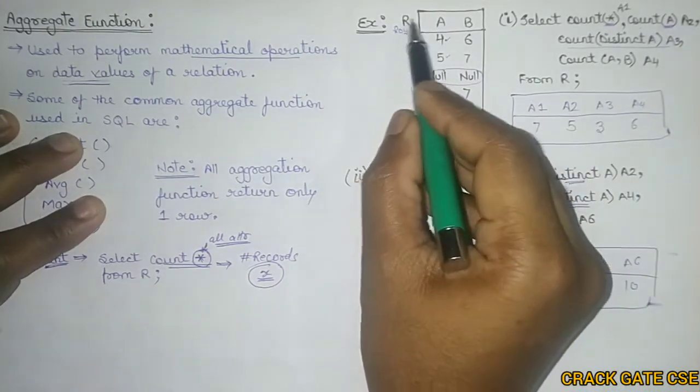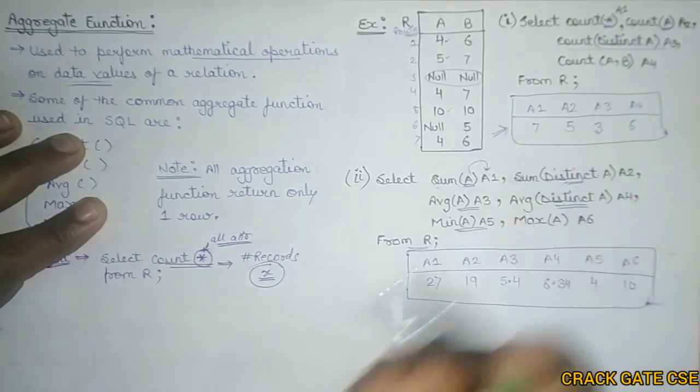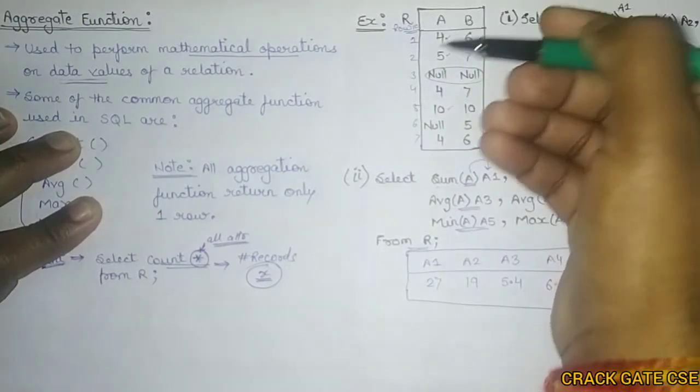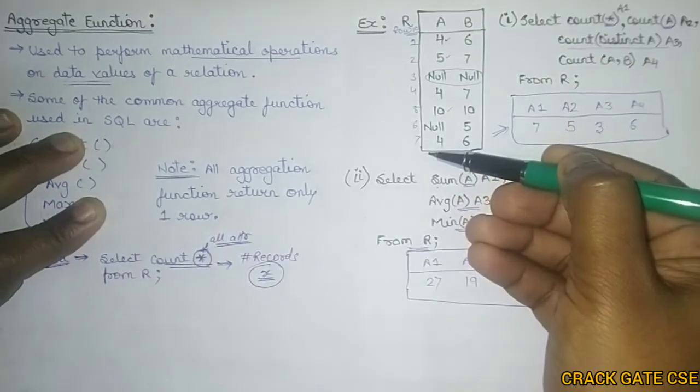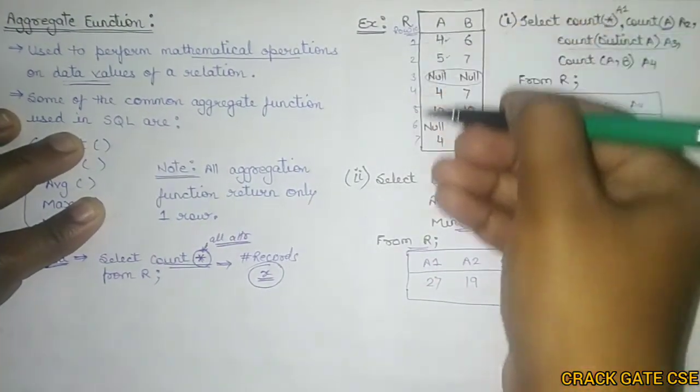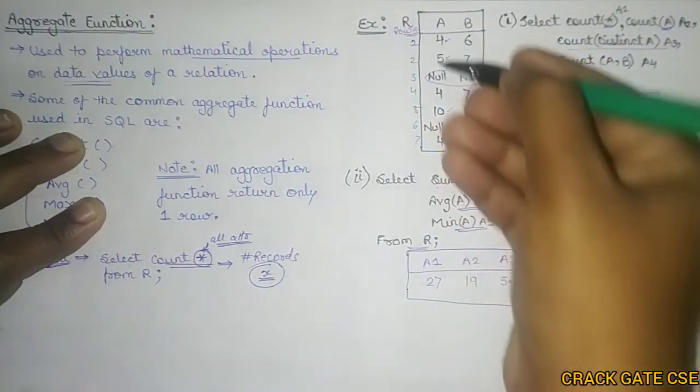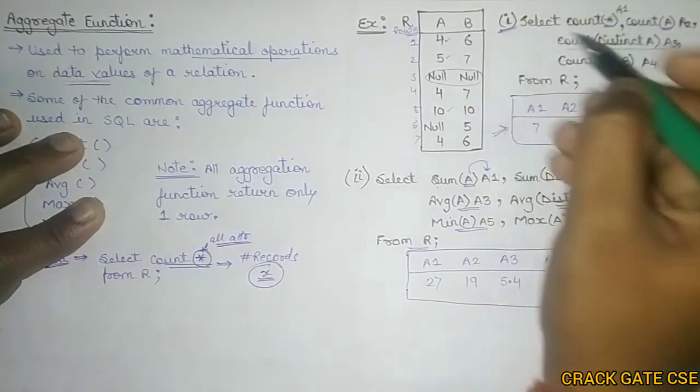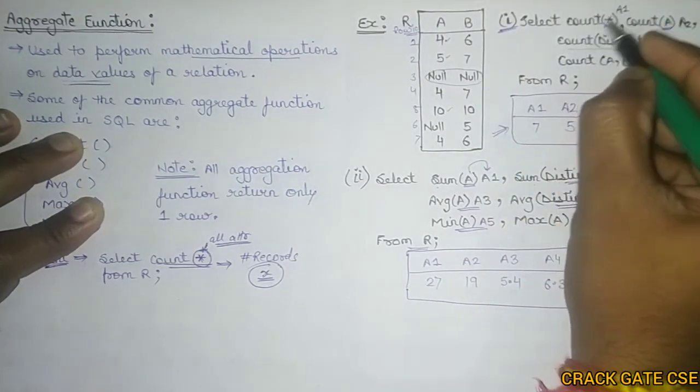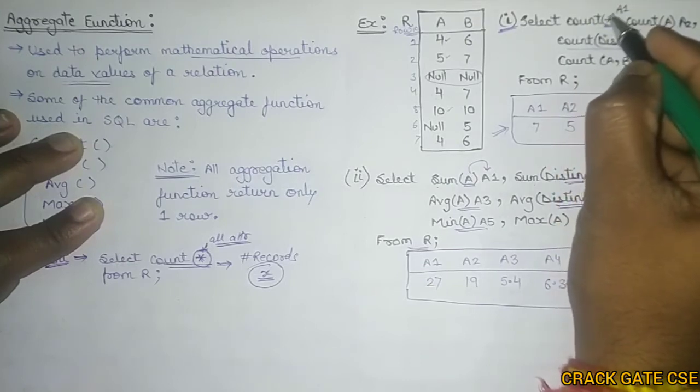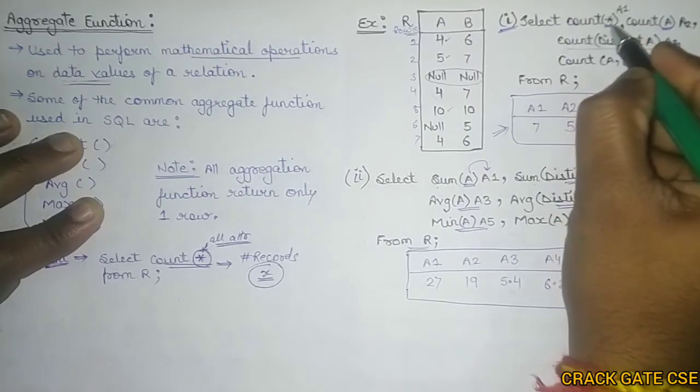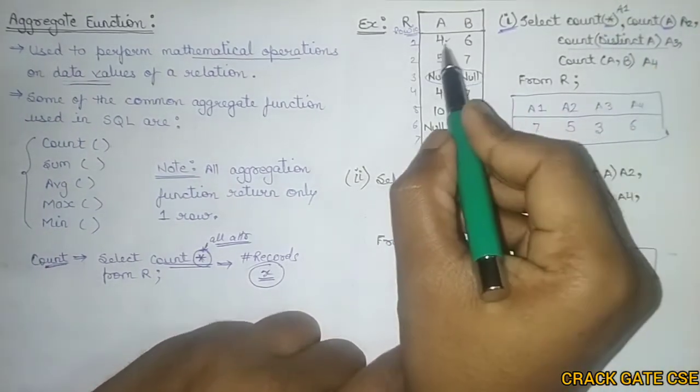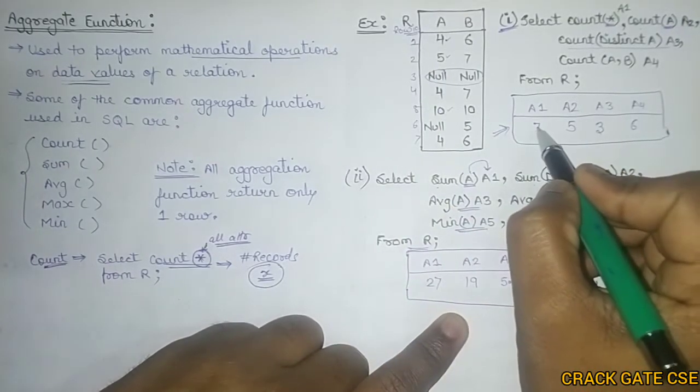Here I took an example where R is a relation with AB attributes and some respective values along with null values. One default thing is there: if you talk about any particular database, there is a row ID with respect to every row by default, like we have in Excel. Now the first query is select count star A1. This means count all records and store the value in A1. So I counted all the records. How many records are there? 7 records because 7 rows, and I am storing this 7 in A1.